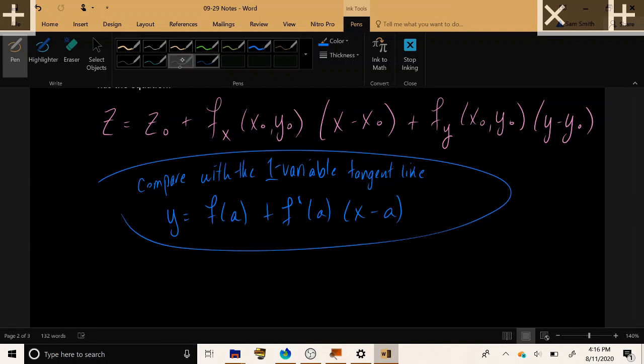Because this tangent line, well, it is a linear function because it has just x to the first power. And in addition to that, it does a good job of approximating the function's output values.